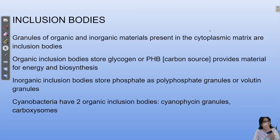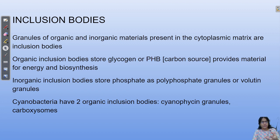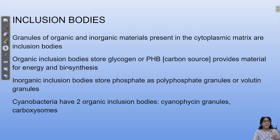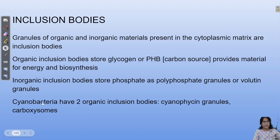Prokaryotes need storage for carbon and phosphorus. These can be stored in the bacterial cell in the form of granules or lipid droplets, called inclusion bodies. Organic inclusion bodies include glycogen and poly-beta-hydroxybutyrate (PHB), which provide material for energy and biosynthesis. Inorganic inclusions include phosphate granules and volutin granules. Cyanobacteria, also called blue-green algae, have organic inclusion bodies such as cyanophycin granules and carboxysomes.